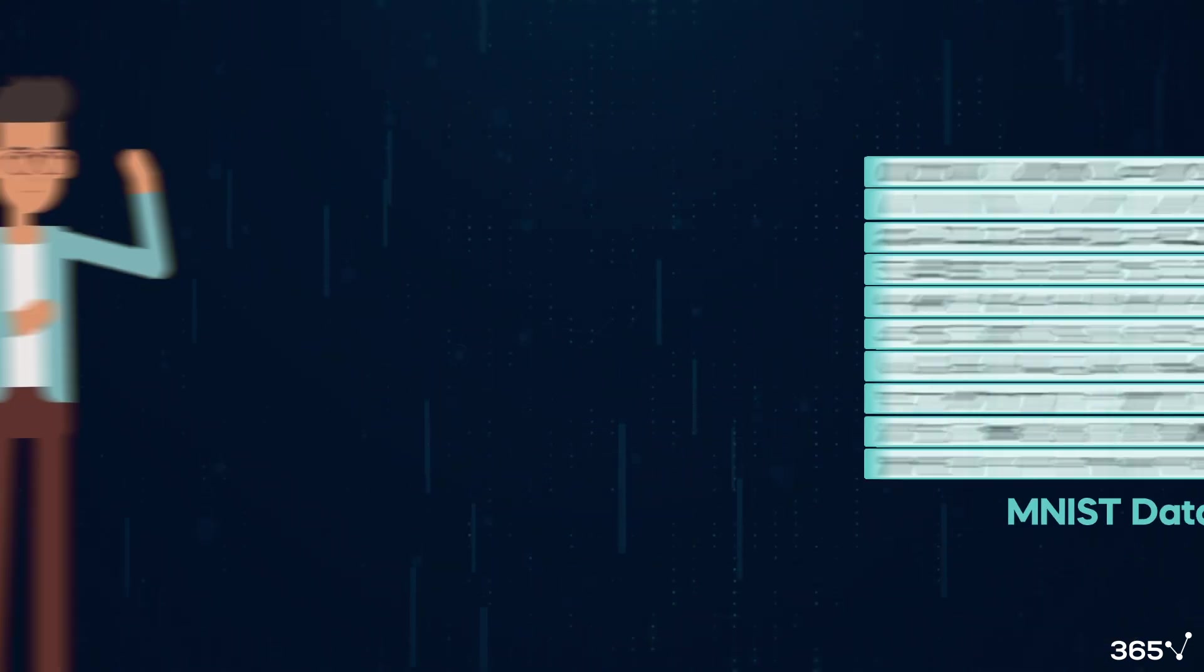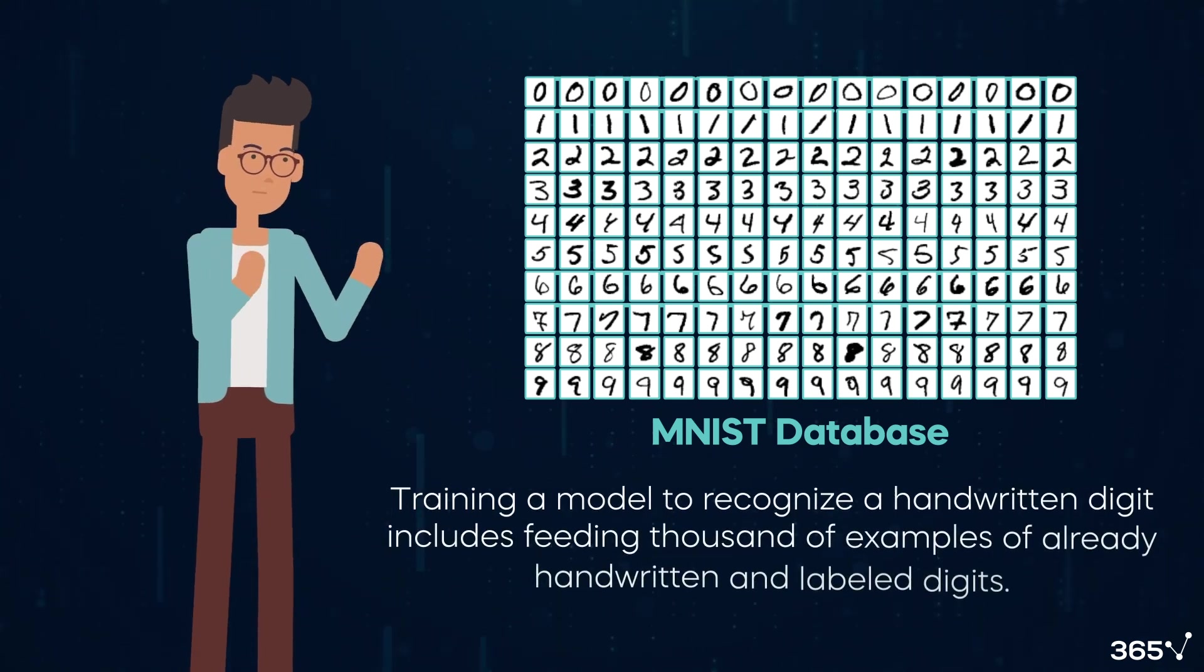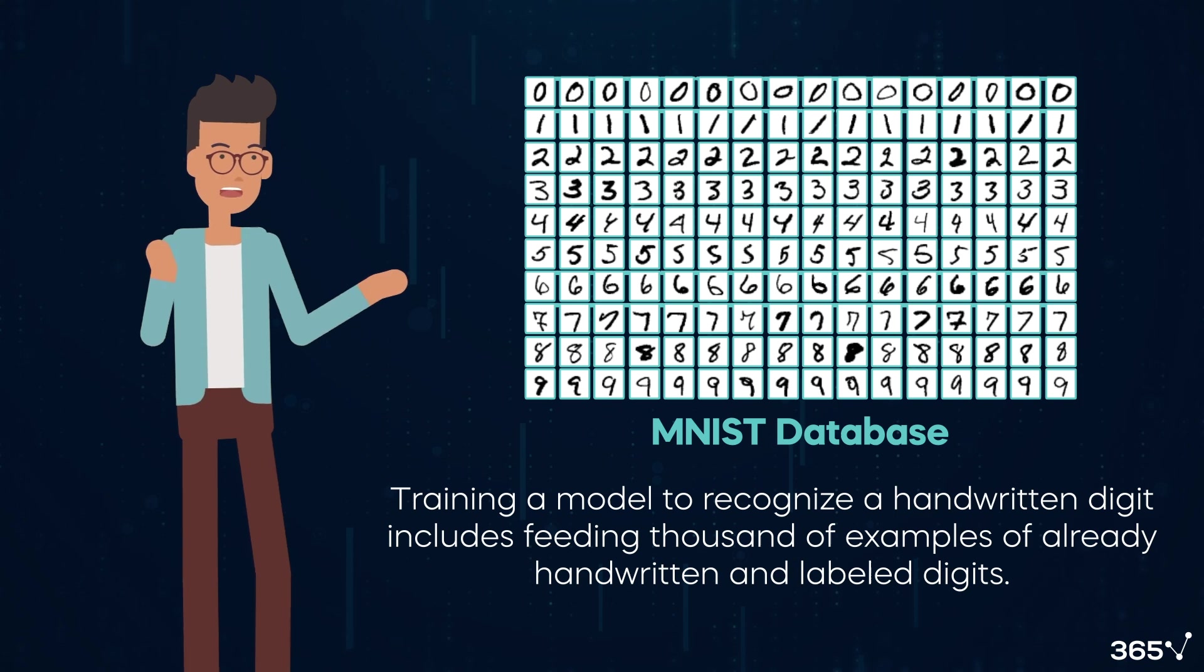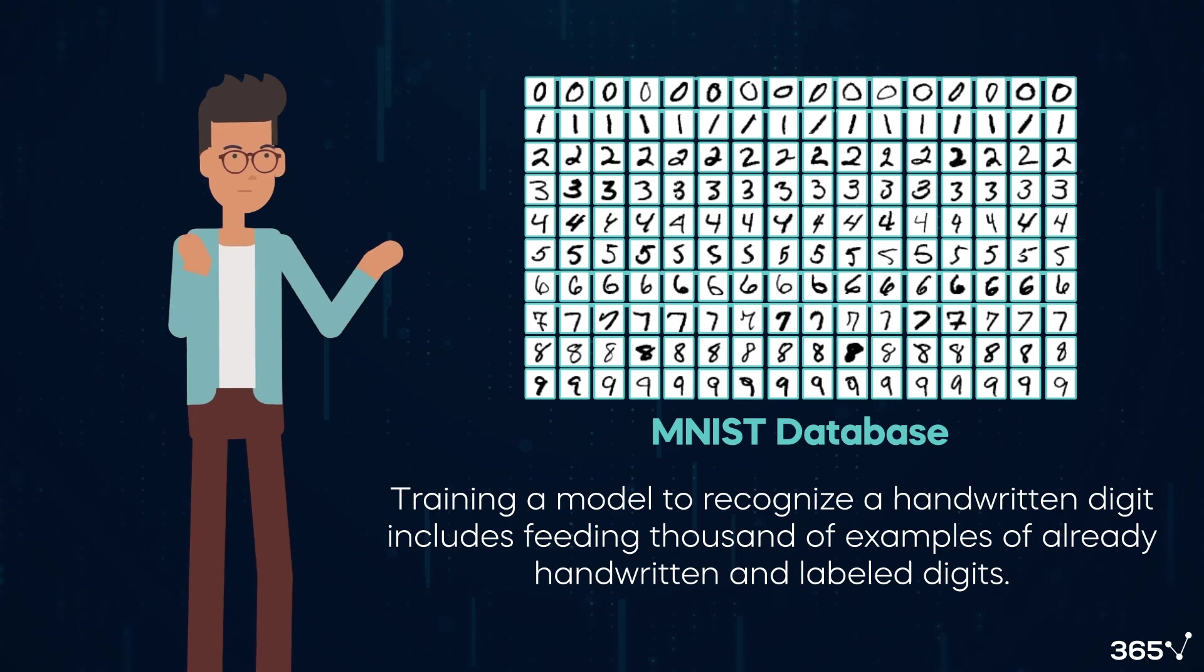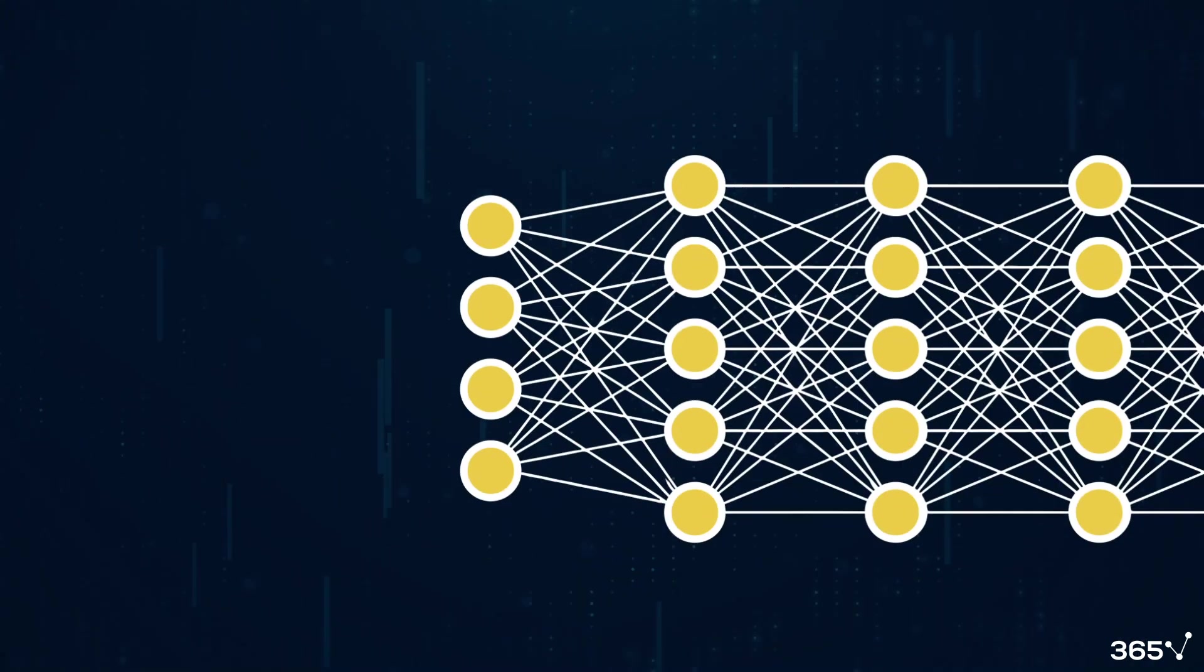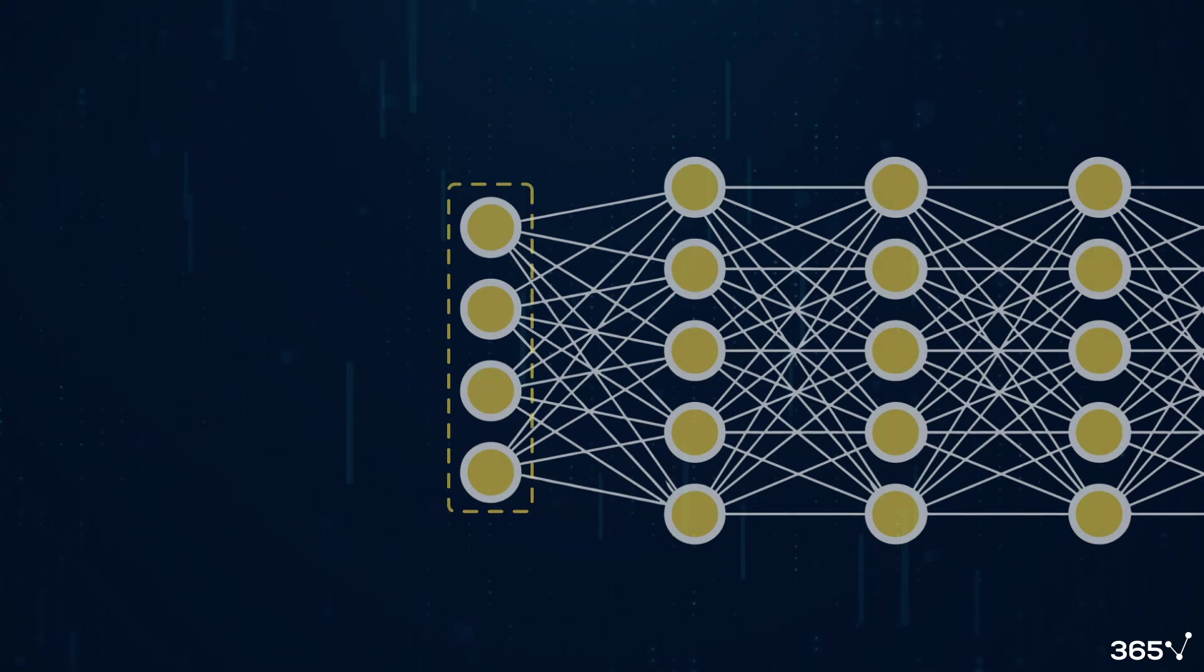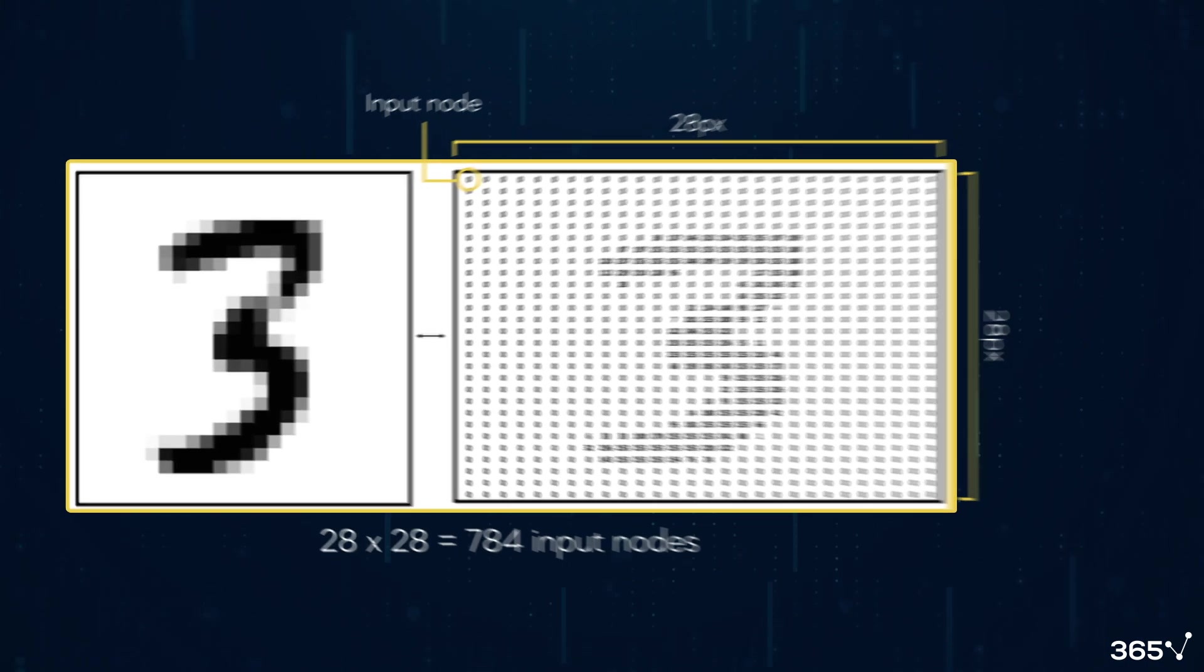Let's use the MNIST database as an example. Training a model to recognize handwritten digits involves supplying thousands of pre-labeled examples. How does this training happen? While the process may initially appear complex, let's simplify it to a more manageable form. The process starts with the input layer of the ANN receiving an image of a handwritten digit. Each pixel of this image serves as an input node. In the case of MNIST, images are 28 by 28 pixels, so the input layer typically has 784 input nodes.